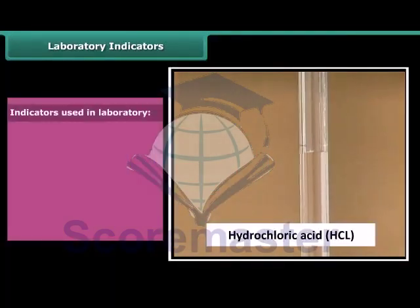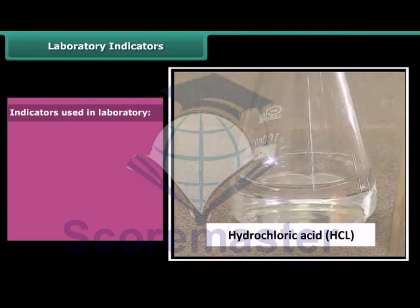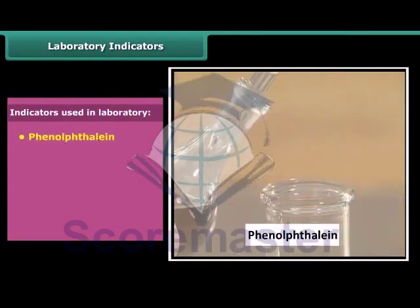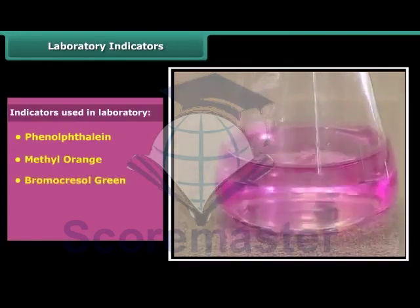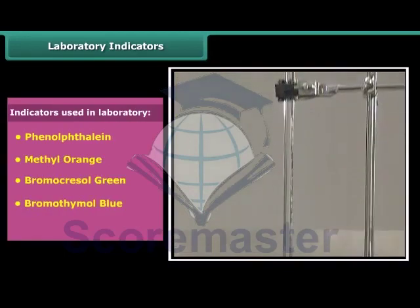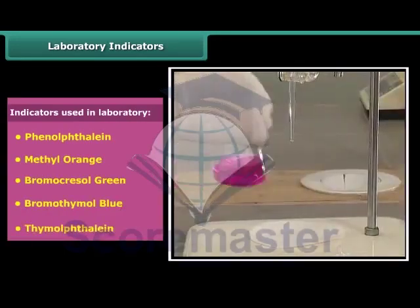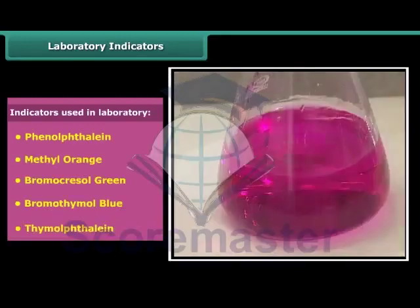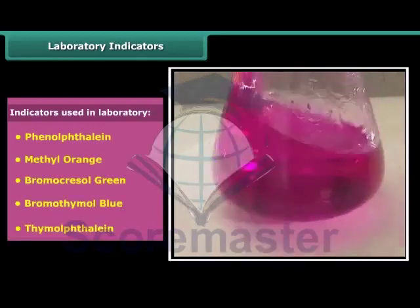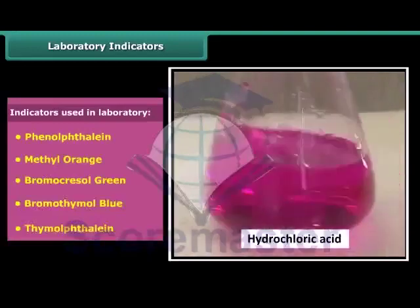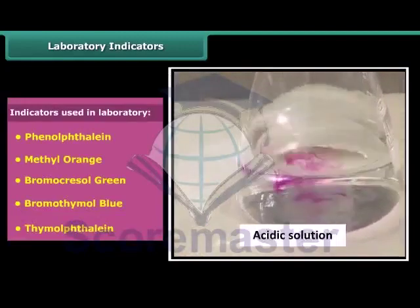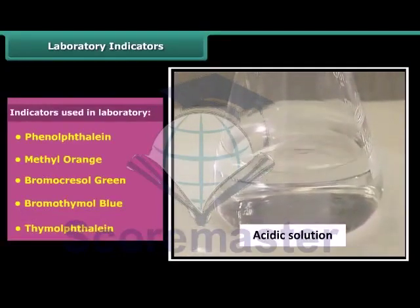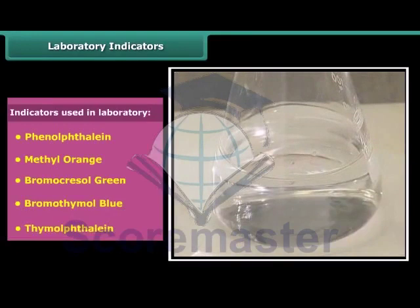Take some hydrochloric acid in a beaker, then add some phenolphthalein to it. Now add sodium hydroxide dropwise to this solution with continuous stirring. After some time, a pink color slowly appears in the solution. When we add more sodium hydroxide, the pink color becomes brighter. On adding a drop of hydrochloric acid, the solution again becomes colorless. So phenolphthalein appears pink in alkaline solution, colorless in acidic solution, and colorless in neutral medium.